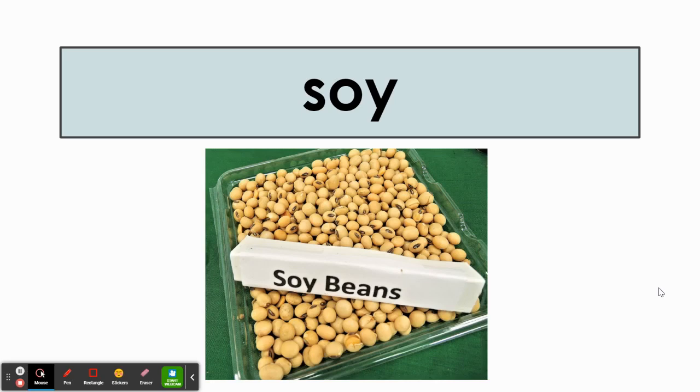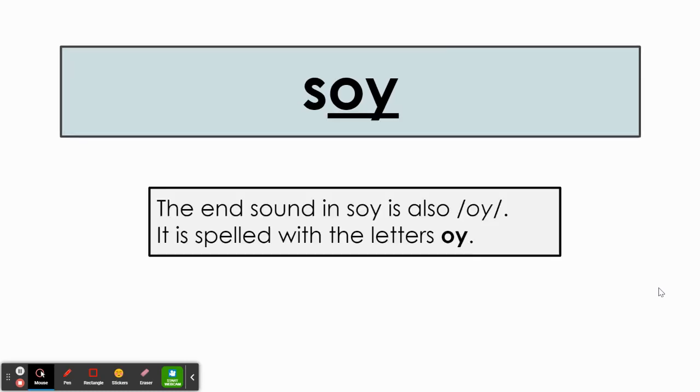And lastly, this is the word soy. S-o-y. Like soybeans or soy sauce. Soy. The end sound in soy is also o-y. It is spelled with the letters o-y.